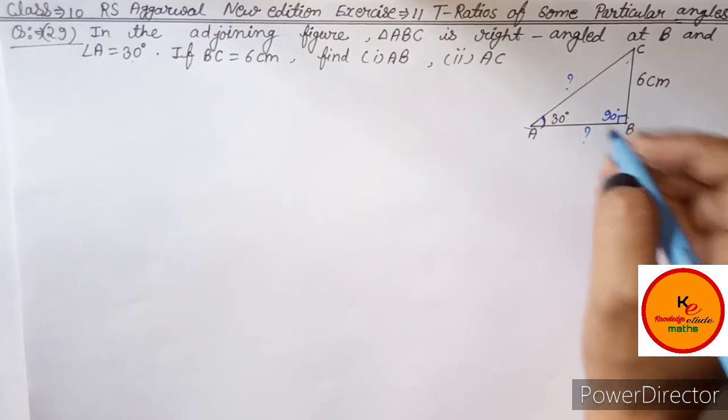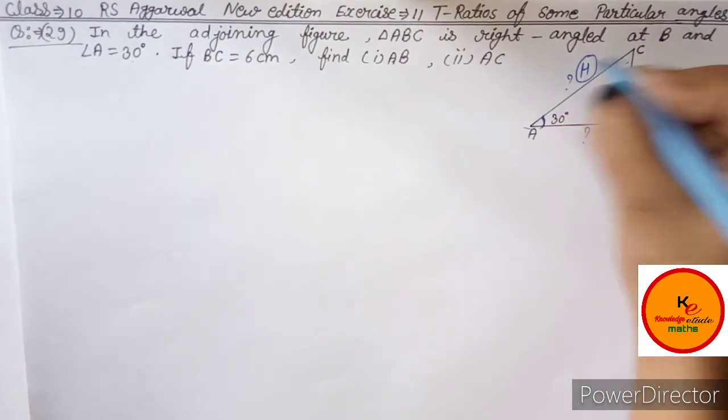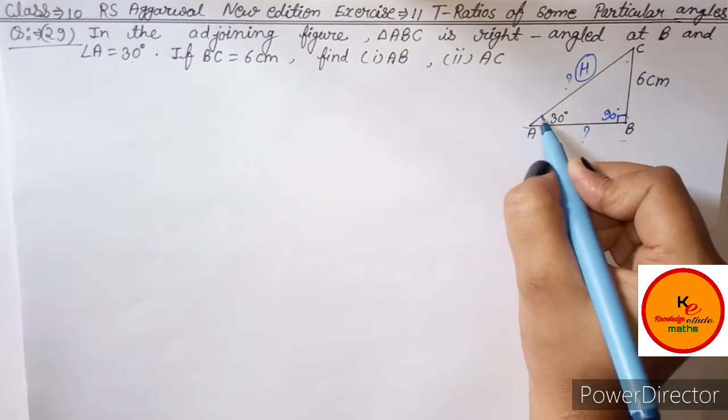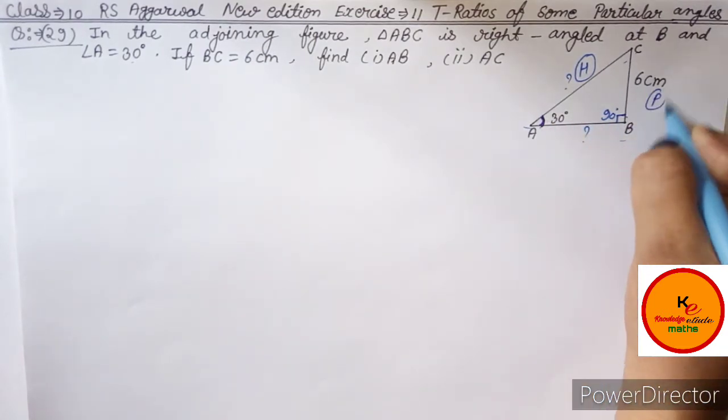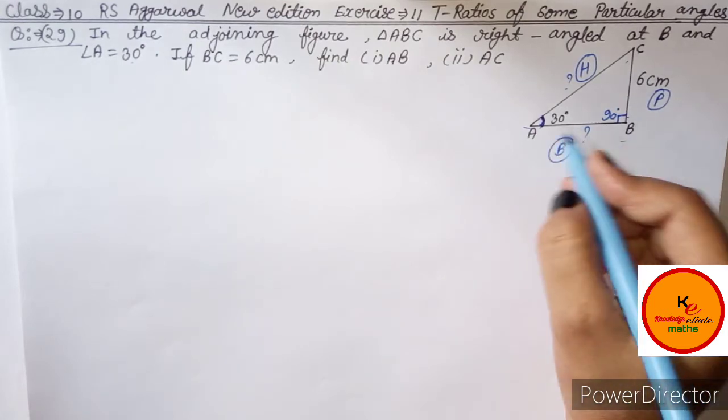So this means this is your hypotenuse. And you're given 30 degree here. Friends, if this is 30 degree, then the side opposite to it will be perpendicular and this will be base.